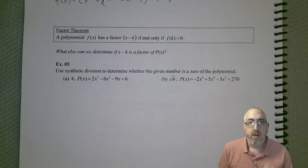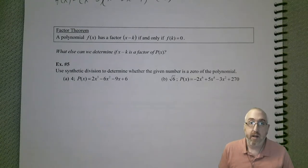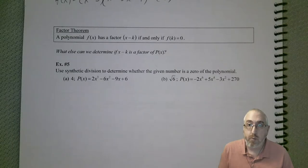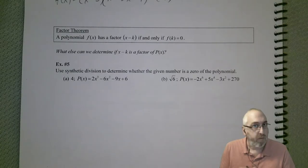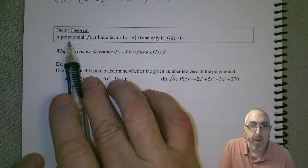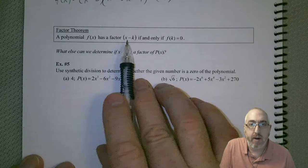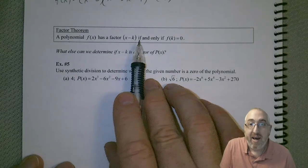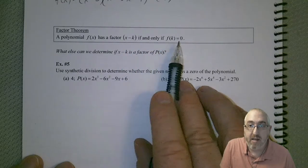All right, welcome back. So now, the last part of this section is looking at the factor theorem, which is kind of a spin-off of the remainder theorem, and we'll see why. The factor theorem says that a polynomial f(x) has a factor (x - k) if and only if f(k) is equal to 0.